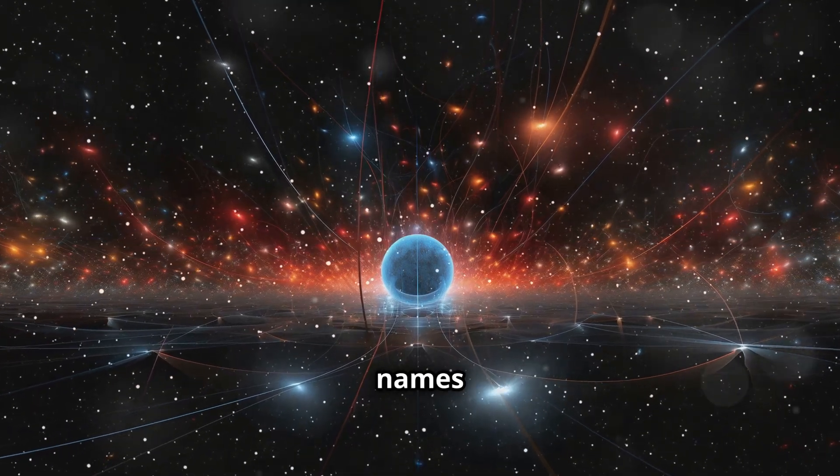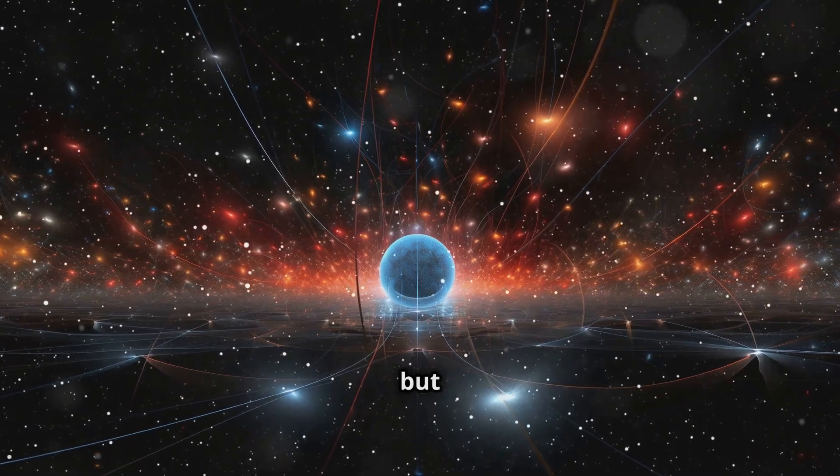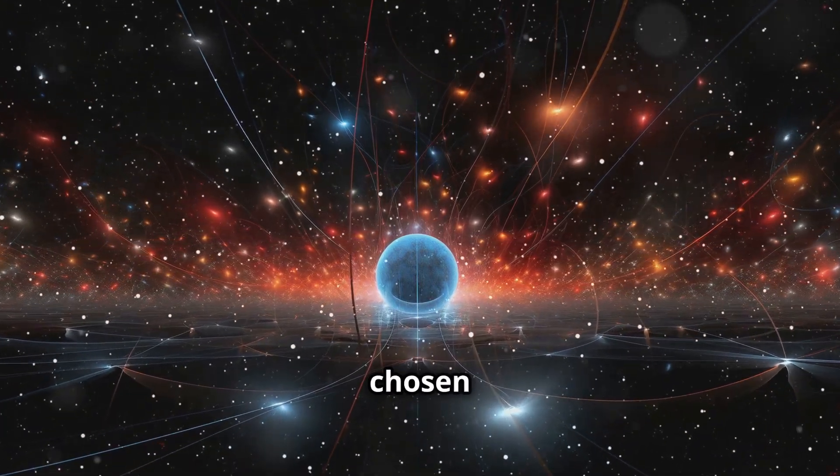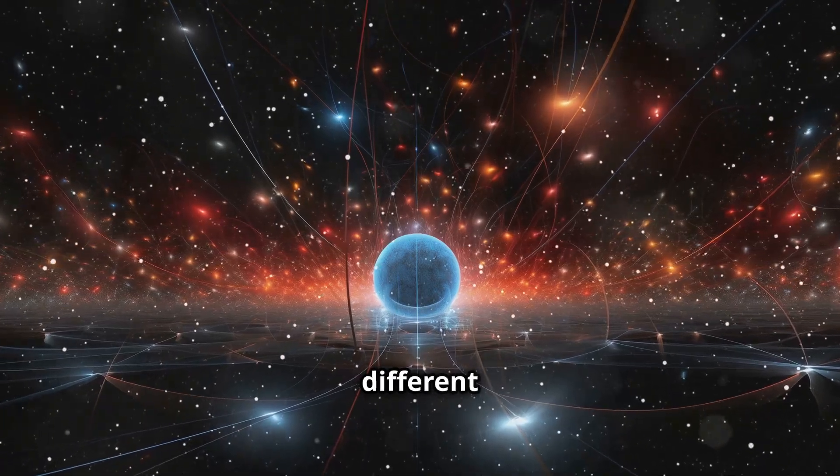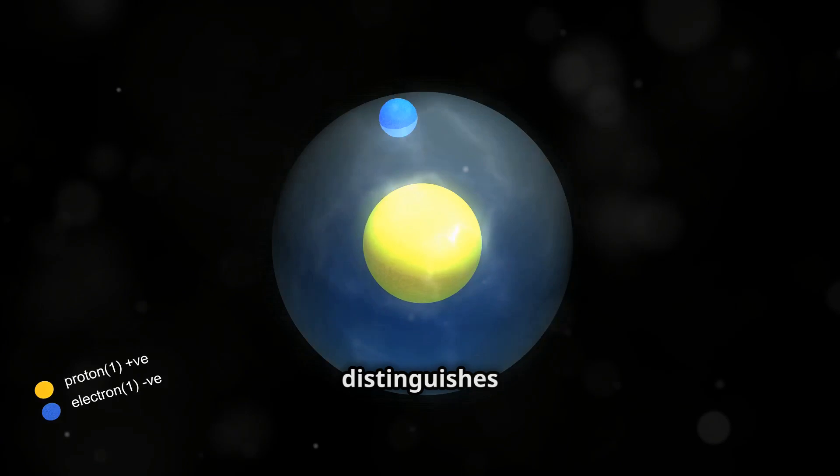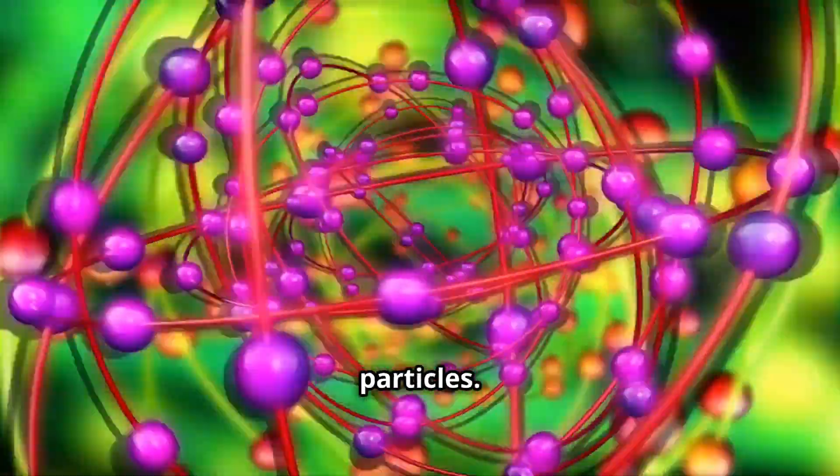These whimsical names have no relation to their actual properties, but they do make it a little easier to keep track of them. The names were chosen to be memorable and to distinguish between the different types. Each quark also carries a fractional electric charge, a property that distinguishes them from other fundamental particles.